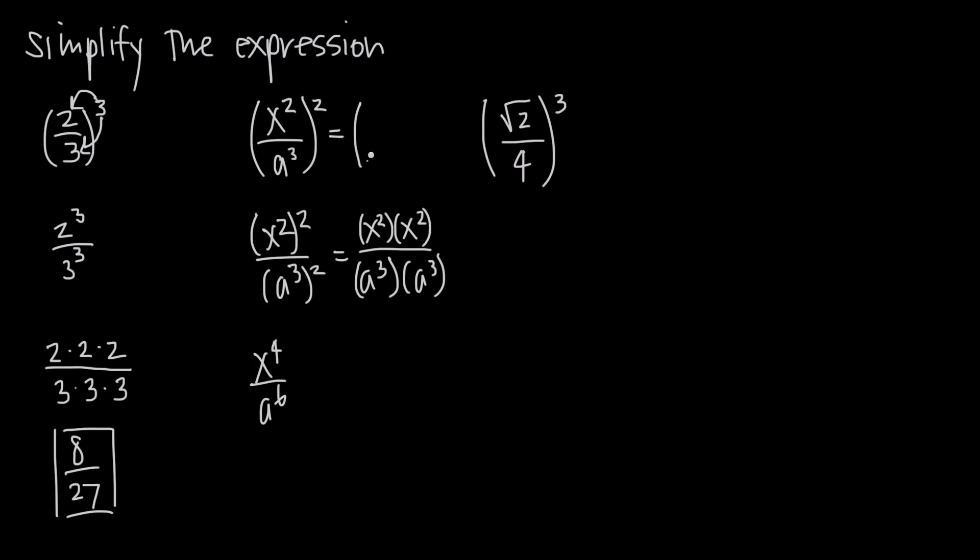So this is the same as x² over a³ times x² over a³, and now you can just multiply across your numerator and denominator, right? We basically got to this point, we just didn't distribute the exponent directly across the numerator and denominator. And so of course you'd still end up with x to the 4th over a to the 6th.